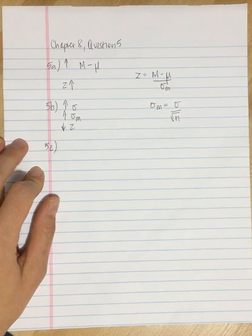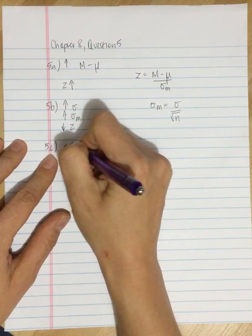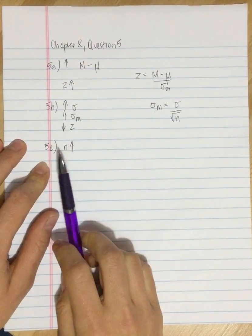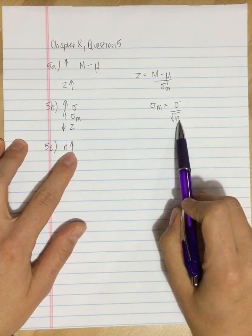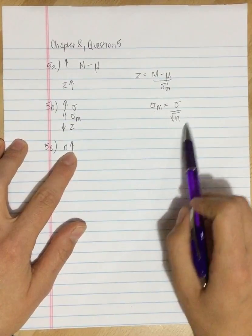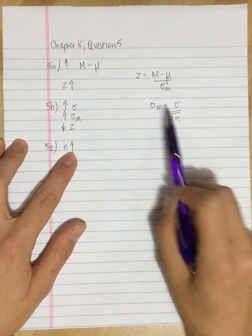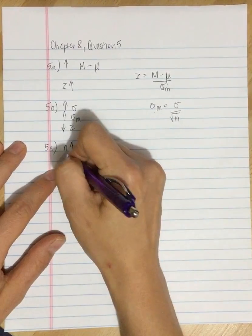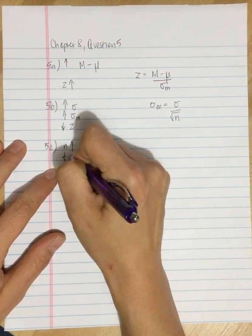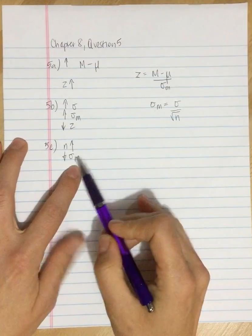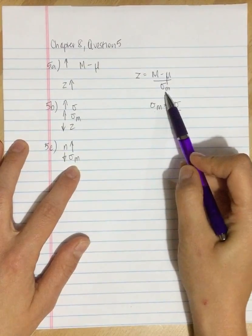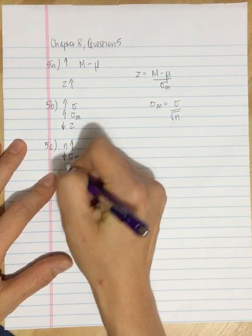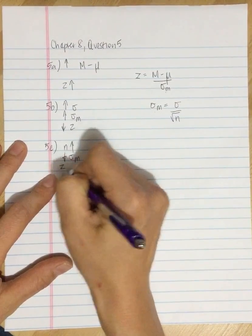5c: increasing the number of scores in the sample, so increasing n. As n increases, you're dividing by a larger number, so your standard error is going to decrease. If your standard error decreases, you're dividing by a smaller number in the Z-score formula, so your Z-score is going to increase.